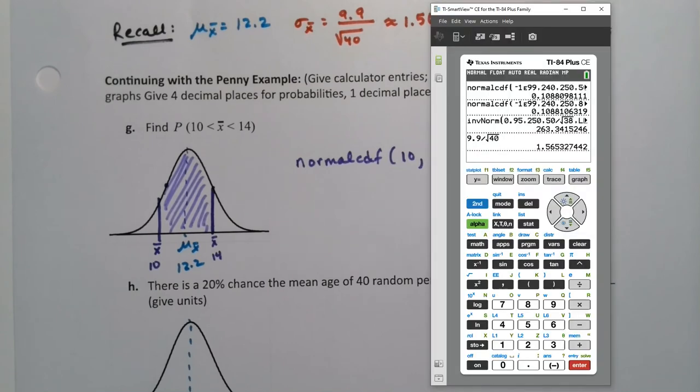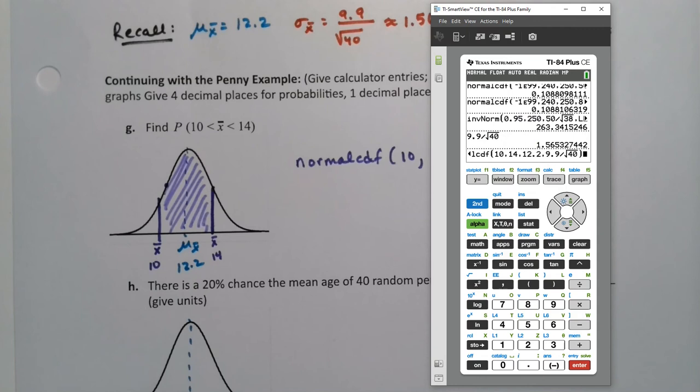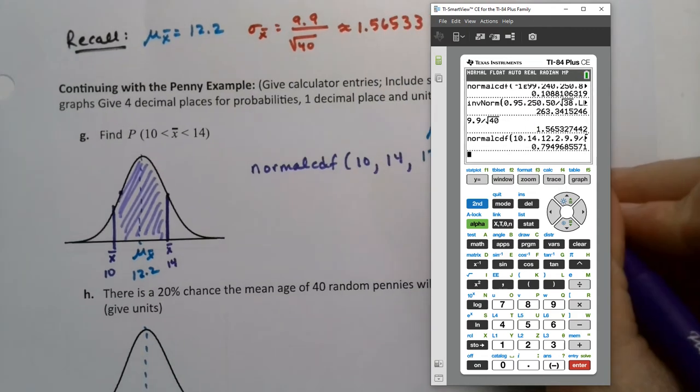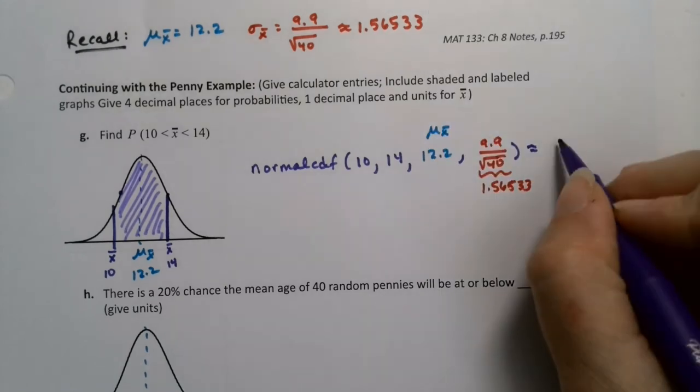So let me go to second distribution, number two, normal CDF. 10, 14. Then we want 12.2. And I'm actually going to type in 9.9 divide second square root 40, close parentheses and go down to paste. And I pasted it in. So I press enter and there you have it. So that area that I've shaded is 0.79, 7, 9, 4, 9, 6. So that's 7, 9, 5, 0 if it rounds.